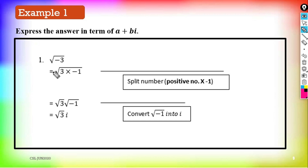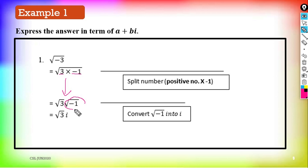Number 1: √(−3). We split the number into a positive part multiplied by negative 1, so √(−3) = √(3 × −1). We can separate this into √3 × √(−1). Since √(−1) = i, we get √3 × i. Therefore, the answer is √3·i.